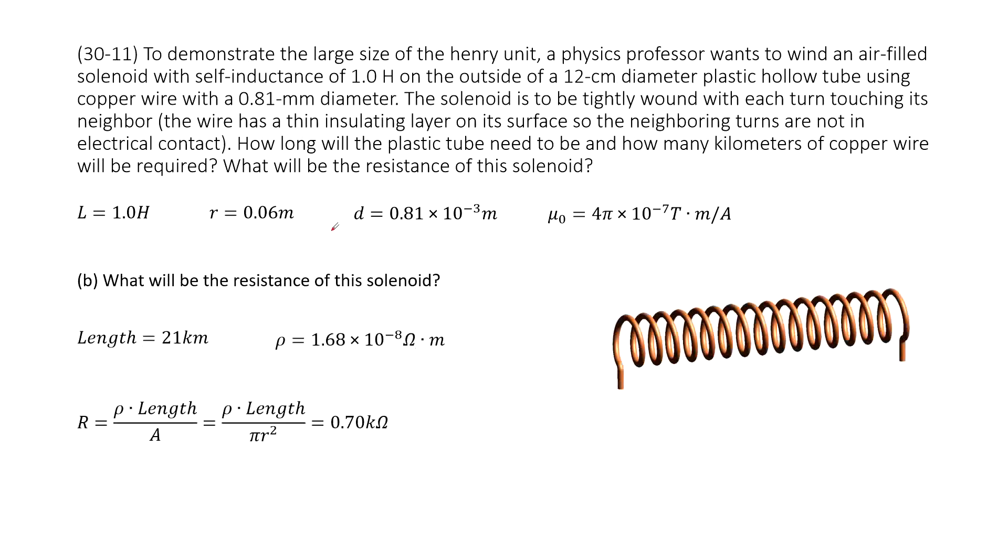The next one asks what will be the resistance of this solenoid. For this case, it tells you this is copper, the material is given. Also the length for this wire is given, and the diameter is given, so the radius is given. Very easily you can write it as R equals ρL divided by A. Input all the given quantities, you get the answer there.